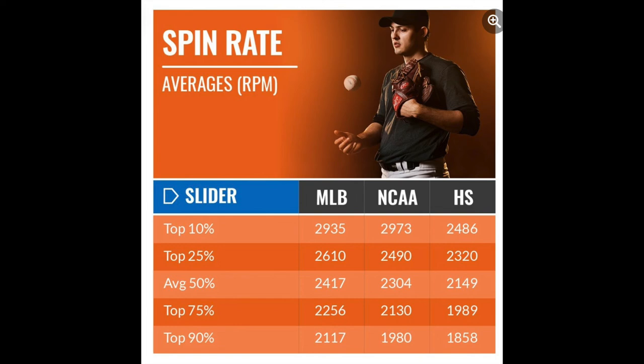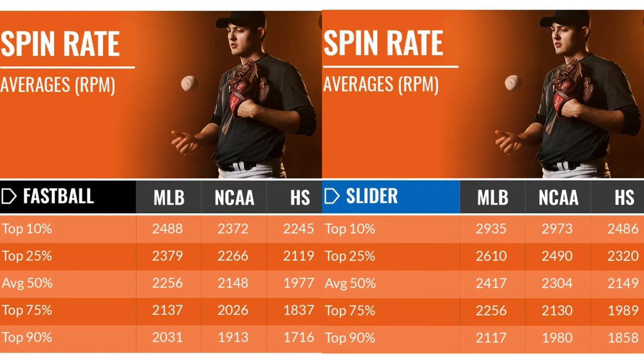Your numbers may not look like this, and if you're a youth player, they probably shouldn't look like this yet. But these are the top 10% of the best in the world spinning it at this rate. This is aimed to help you figure out what you do well, where you stack up against the averages, and then you'll be better able to design your pitches around that data and information.